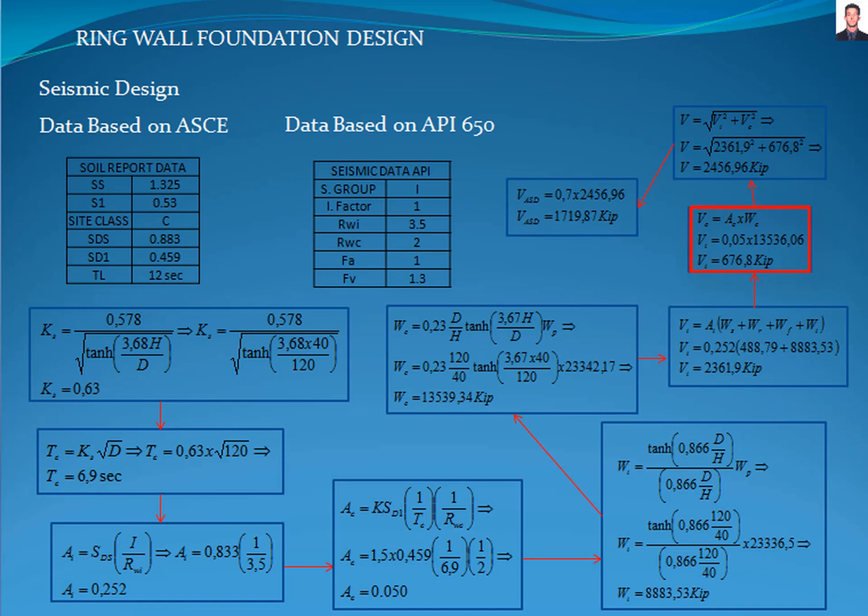The next step is to calculate the lateral force due to the convective spectral acceleration parameter PC with the equation E6.1-3, giving a result of 676.8 kilopounds.